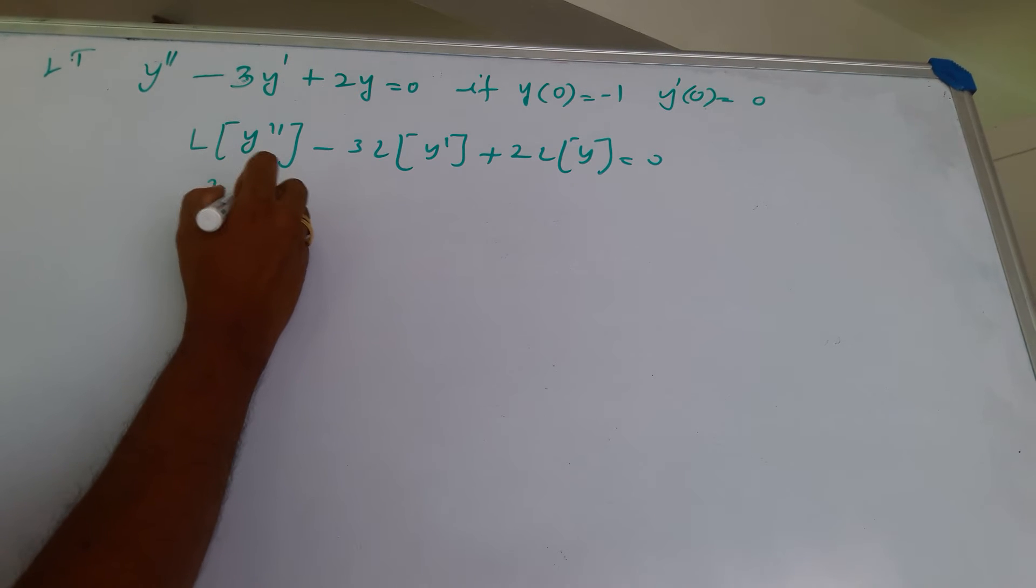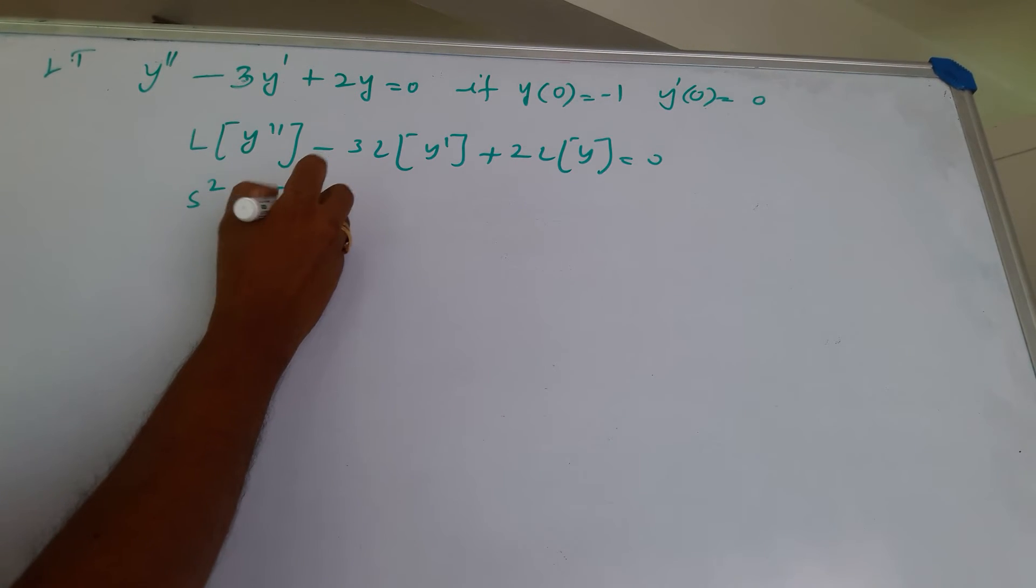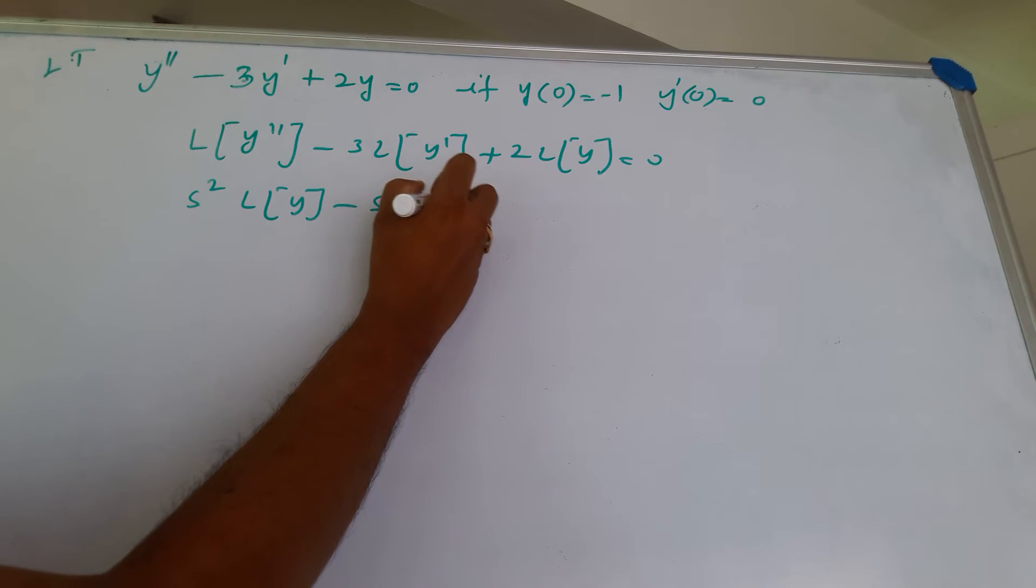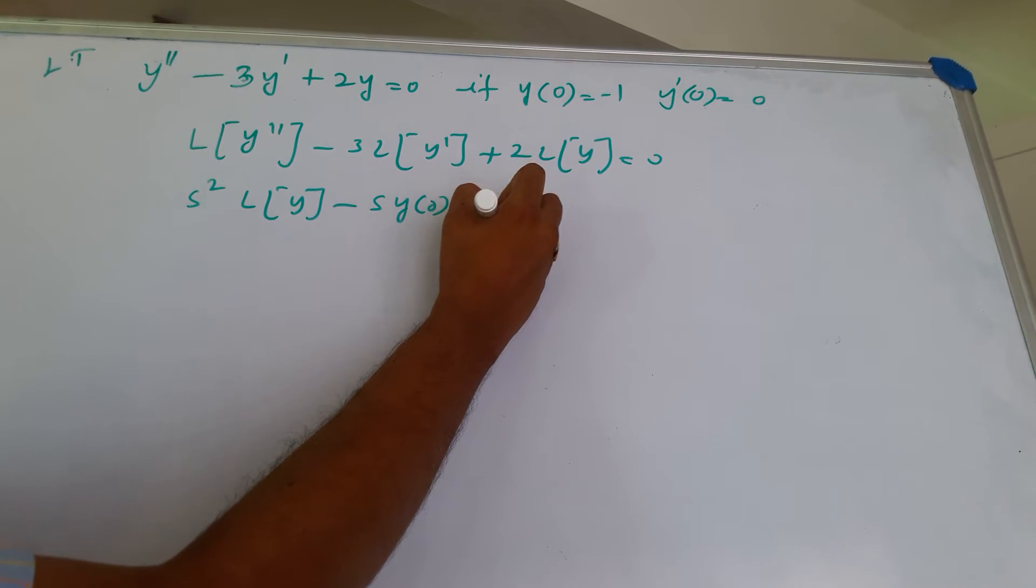This is s squared L of y minus s y of 0 minus y dash of 0.